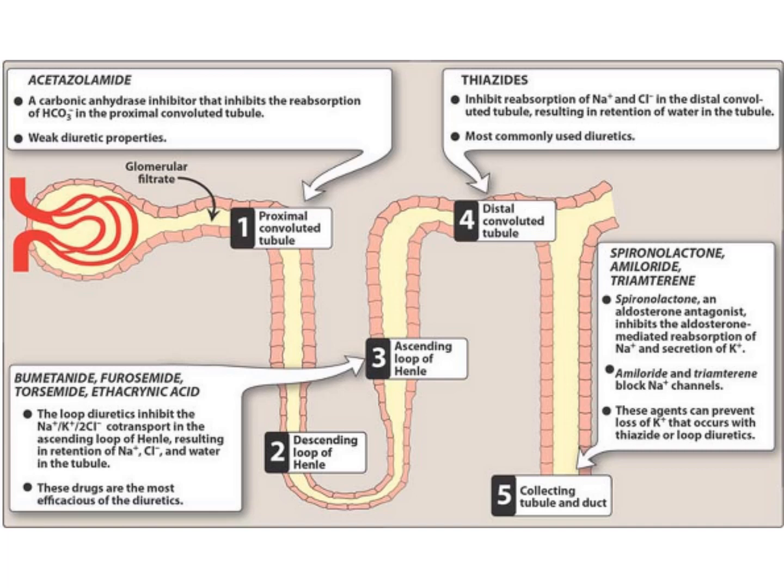The next group of diuretics involves those that act on the ascending loop of Henle, like bumetanide, furosemide, and others. These loop diuretics inhibit the co-transportation of sodium, potassium, and chloride in the ascending loop of Henle, resulting in the retention of sodium chloride and water in the tubule. These drugs are the most potent known diuretics.